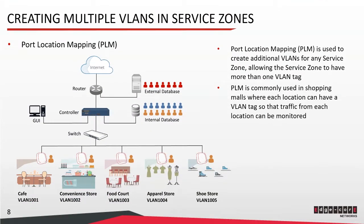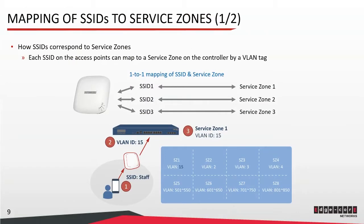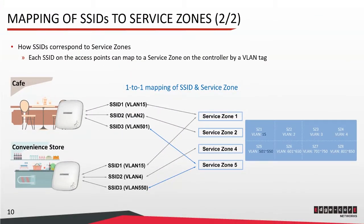Port Location Mapping, or PLM, can be used to create additional VLANs for service zones so that any service zone can have more than one VLAN tag. This is very useful if you have many sites and want to do location-based advertising — you can assign a VLAN tag to each site to monitor traffic per site. Under access points, each SSID carries a VLAN tag, and the controller directs traffic to the service zone with the same VLAN tag. For example, the SSID 'staff' carries VLAN 15 and maps to service zone 1, which also has VLAN tag 15.